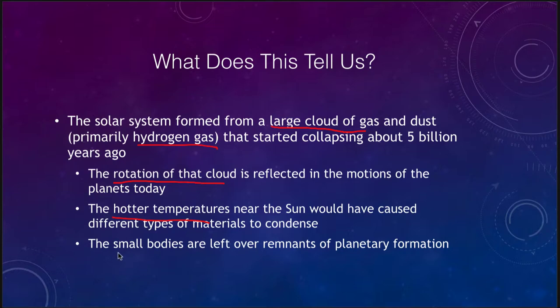The small bodies we see — asteroids and comets — are actually remnants of the planetary formation. Comets could be bits of the material that might have gone into forming the outer, or Jovian, planets. The asteroids, the rocky material, might be leftover material of the type that would have formed the terrestrial, or inner, planets. So we may be seeing some of those bits and pieces — remnants of the early solar system still around today.